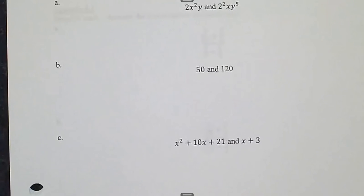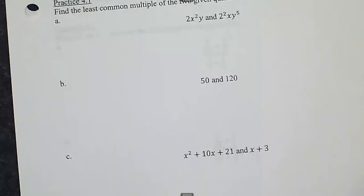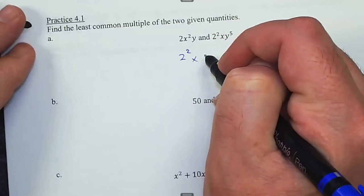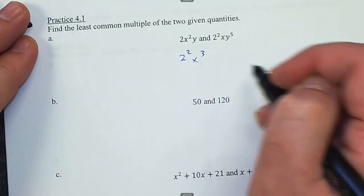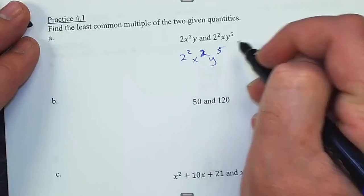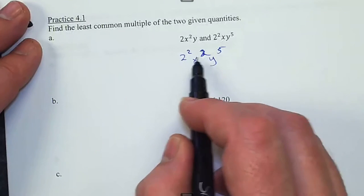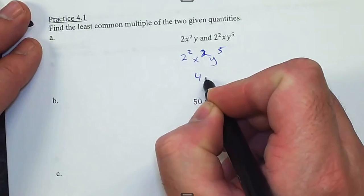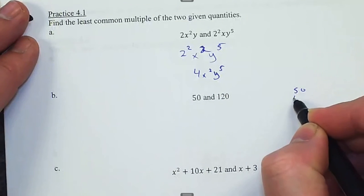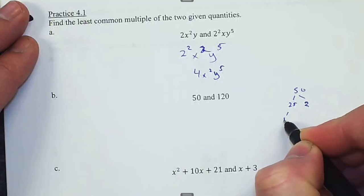Let's see how we did on finding least common multiples. The first one is already factored — we need 2 squared, x squared, and y to the fifth, taking the highest power each base ever occurs. So the LCM is 4x²y⁵.